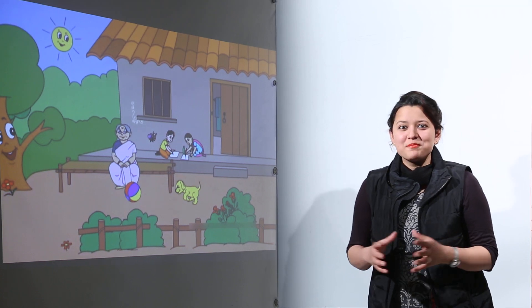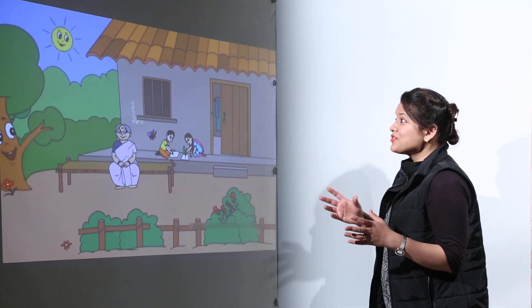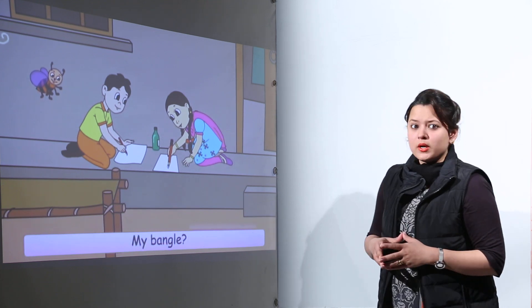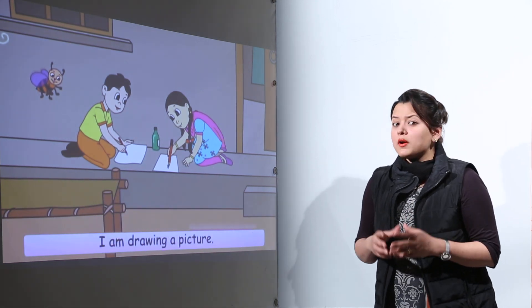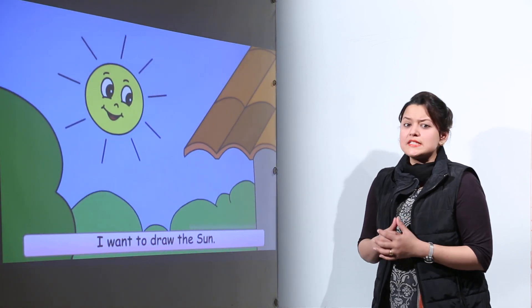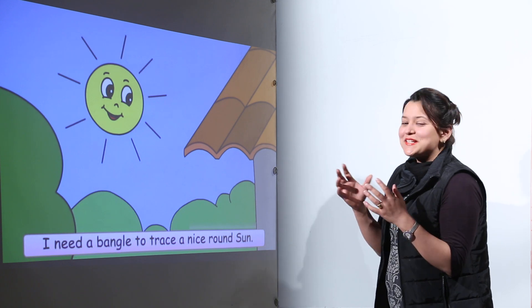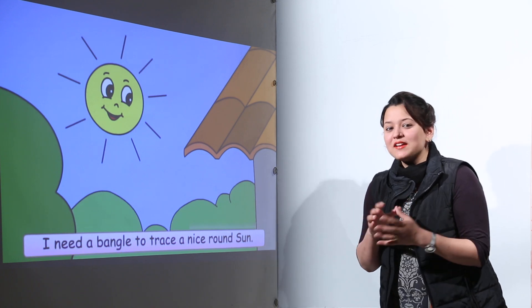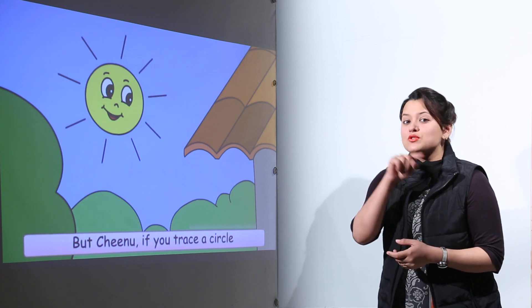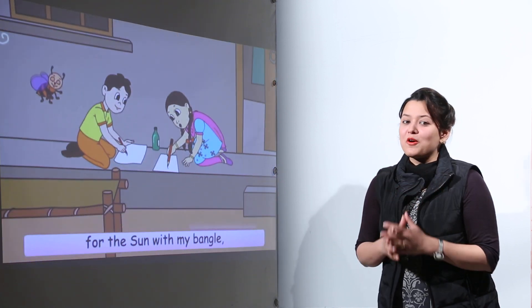It was a bright sunny day and Minu and Chinu were making a drawing. Chinu asked for a bangle from Minu. Minu was surprised - what does he need it for? Chinu explained that he wants to draw a sun on his notebook and needs the bangle to trace a round circle.